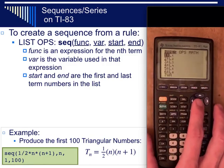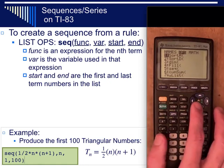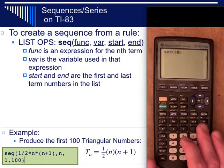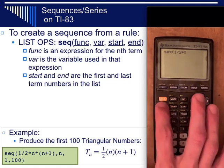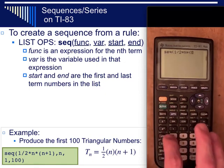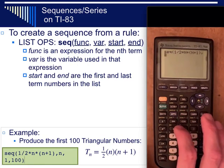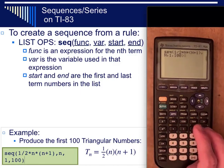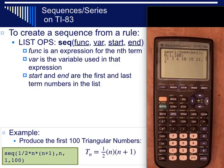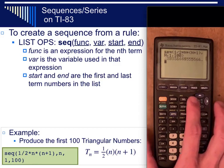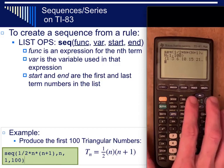Let's see how that works. We'll go into the list menu. The second stat gets me there. Then I'll go over to ops and go down to sequence. Once I've chosen sequence I will type in the formula which is one half times n. Times in parentheses alpha n plus one, then a comma, then tell the calculator what variable we're using which in this case is n and then I want to go from one to one hundred. So now I've got that in there. If I hit enter the calculator is going to think for a little bit because it's generating a hundred numbers and you can see the hundred numbers in this list by pressing over. These are all the triangular numbers.